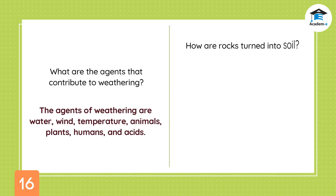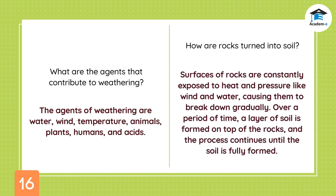How are rocks turned into soil? Surfaces of rocks are constantly exposed to heat and pressure like wind and water, causing them to break down gradually. Over a period of time, a layer of soil is formed on top of the rocks, and the process continues until the soil is fully formed.